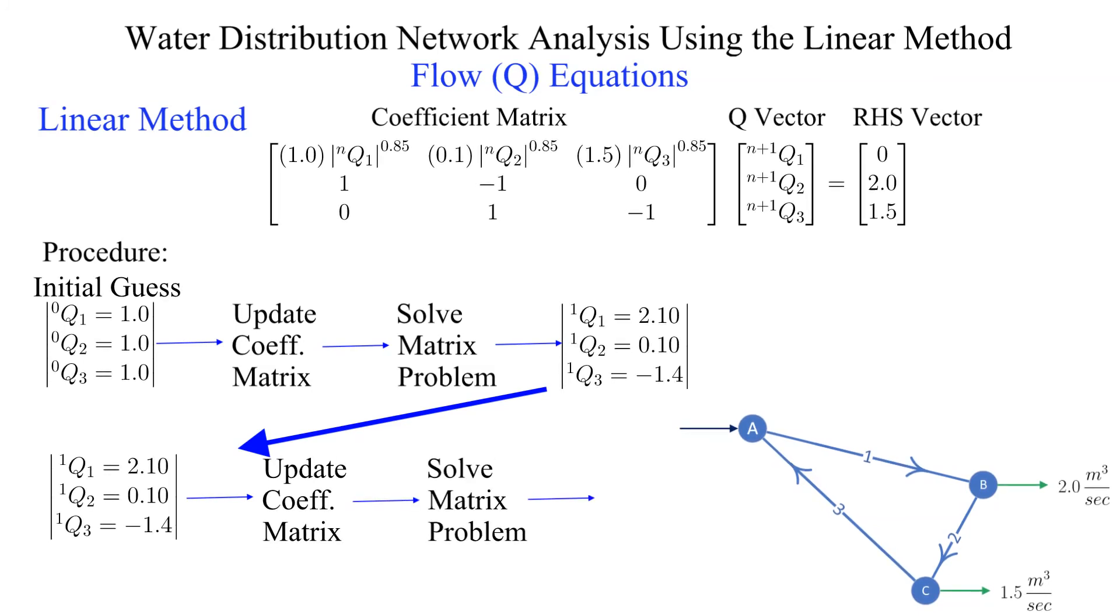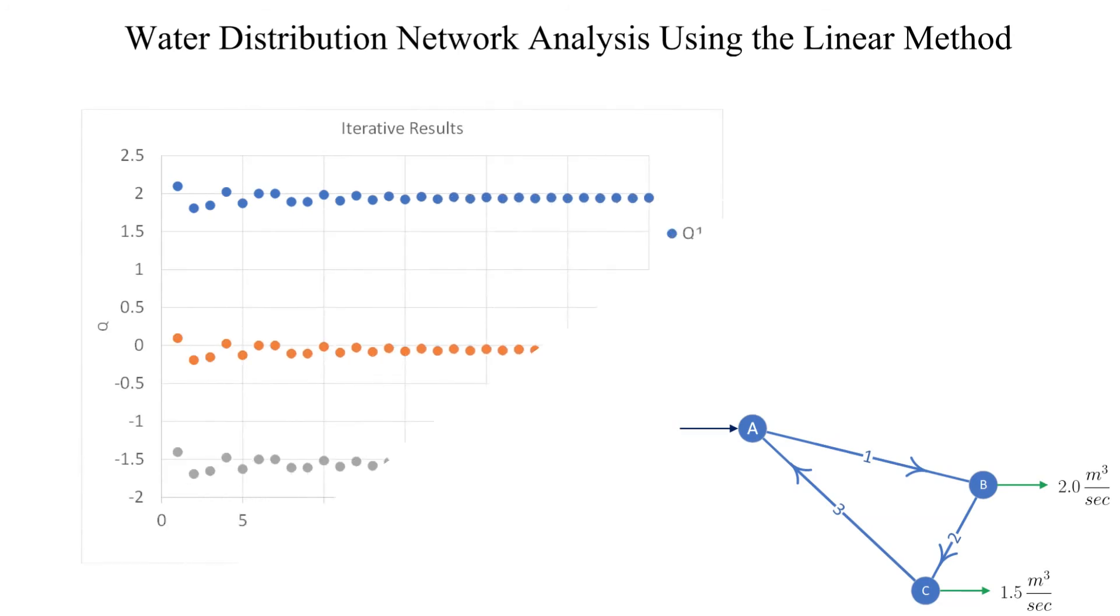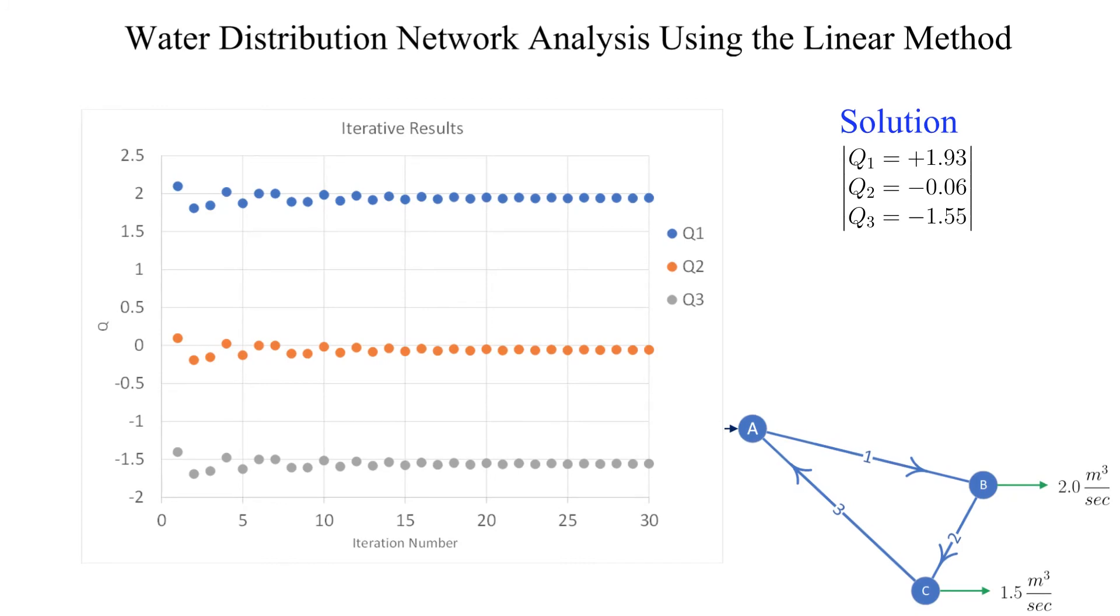We will skip the calculation details, but here are the results using an initial guess of 1 cubic meter per second for each pipe. The final answer is shown. Clearly the assumed directions for the flows in pipes 2 and 3 were incorrect.